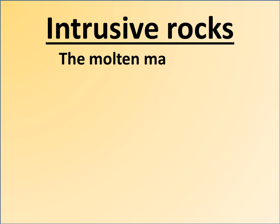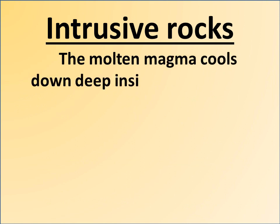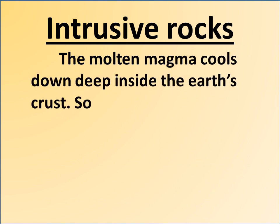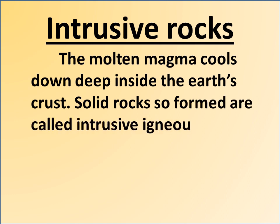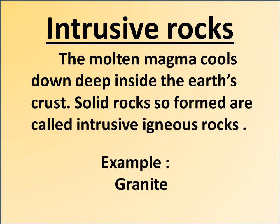Intrusive rocks: the molten magma cools down deep inside the earth's crust. Solid rocks formed in this way are called intrusive igneous rocks. Example: granite.